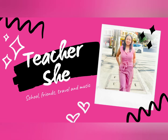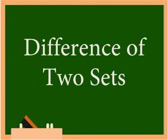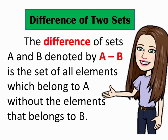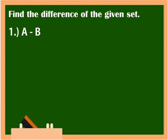Hello everyone! It's me again, Teacher She. Today, we are going to discuss the difference of two sets. The difference of set A and B, denoted by A minus B, is the set of all elements which belong to A without the elements that belong to B. Now, let's have an example.